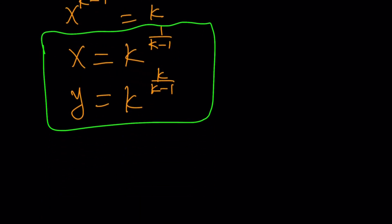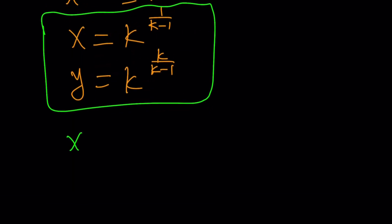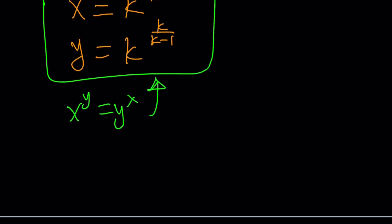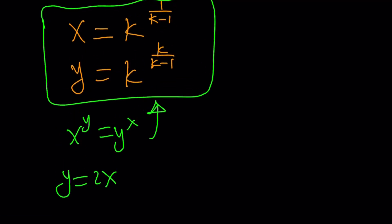Let's get back to the original problem, though. Now we have, in this case, so x to the y equals y to the x has solutions like this. But in this case, we have y equals 2x, right?